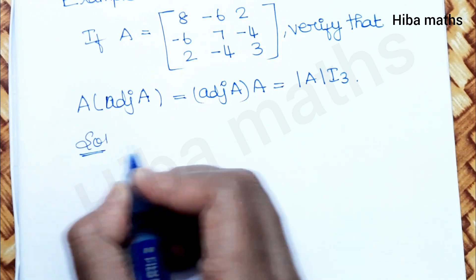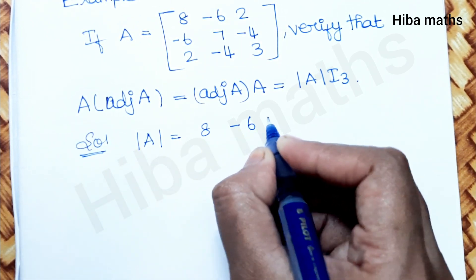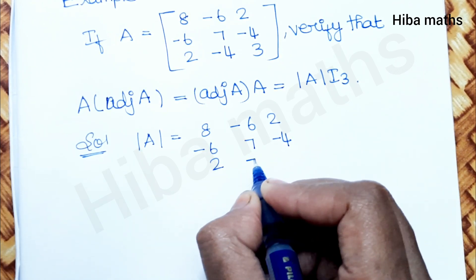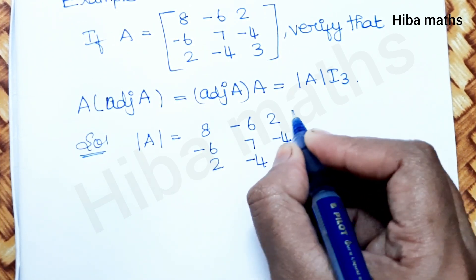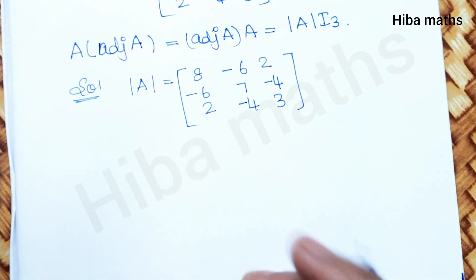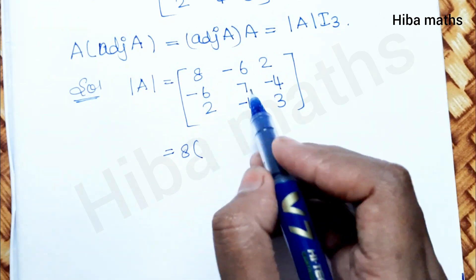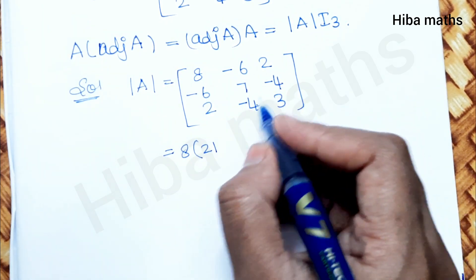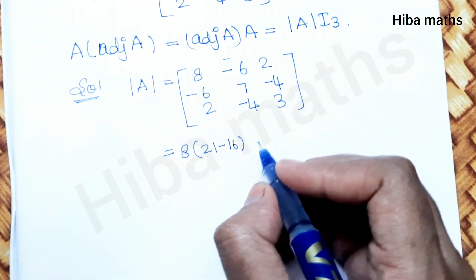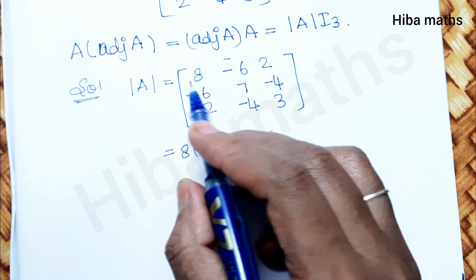Solution: First, modulus of A equals the determinant of [8, -6, 2; -6, 7, -4; 2, -4, 3]. Expanding along the first row: 8 into (7×3 − (−4)×(−4)), which is 8 into (21 − 16), so 8 into 5 equals 40.